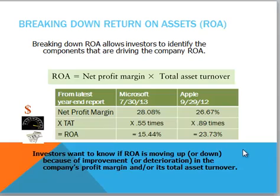Investors want to know if return on assets is moving up or down because of improvement or deterioration in the company's profit margin or its total asset turnover.